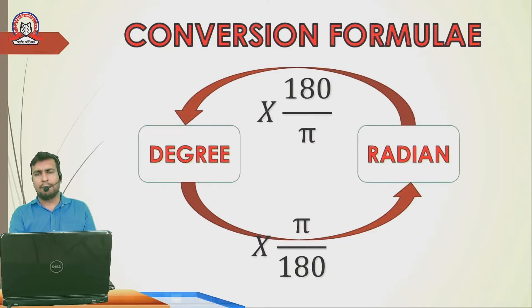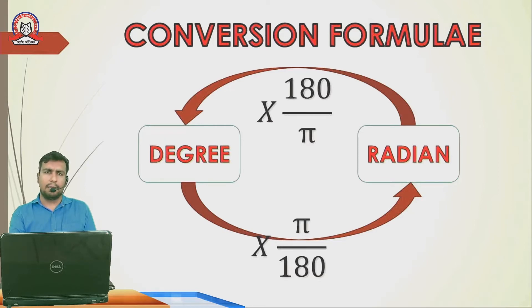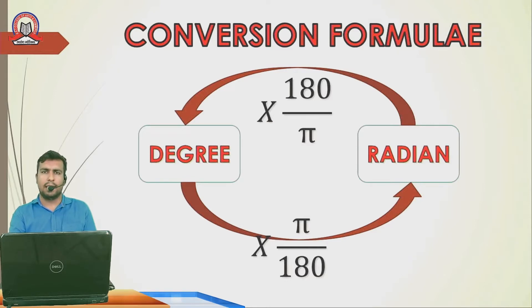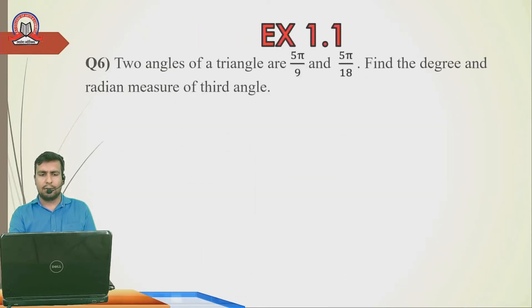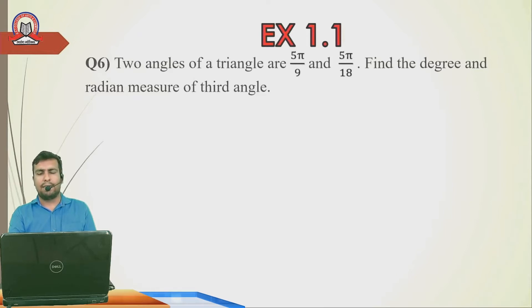We solved 4 questions: the first two covered degree-to-radian and radian-to-degree conversion. We also solved a sum where one angle was given in radian and one in degree, and we had to find the third angle of a triangle. Today's question: 'Two angles of a triangle are 5π/9 and 5π/18 radian. Find the degree and radian measure of the third angle.'